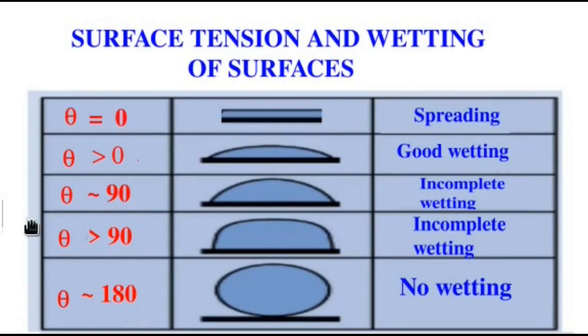These are different cases of the relative magnitude of theta with respect to 90 degrees. Now, if theta is very close to zero that means the liquid will spread all over the surface. Theta greater than 90 is this case. So, the liquid will wet the surface in a nice fashion. Theta very close to 90 we have what is called incomplete wetting. Theta greater than 90 and near to 90 that is also incomplete or partial wetting. And, theta close to 180 degrees there will be no wetting of the surface.